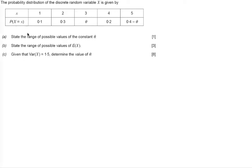In this question we are told the probability distribution of the discrete random variable X is given by this table. It's worth noting that the probability that X equals 3 is equal to theta, and the probability X equals 5 is equal to 0.4 minus theta.